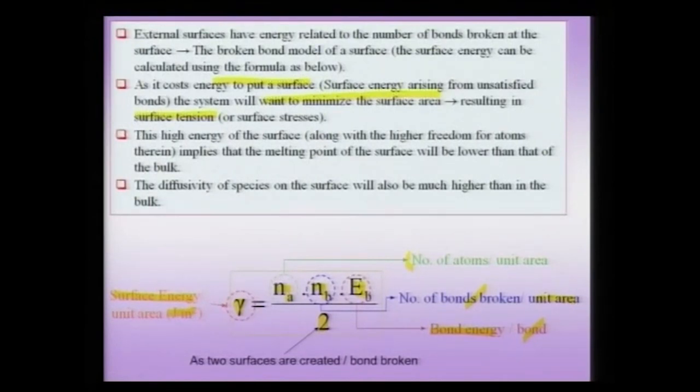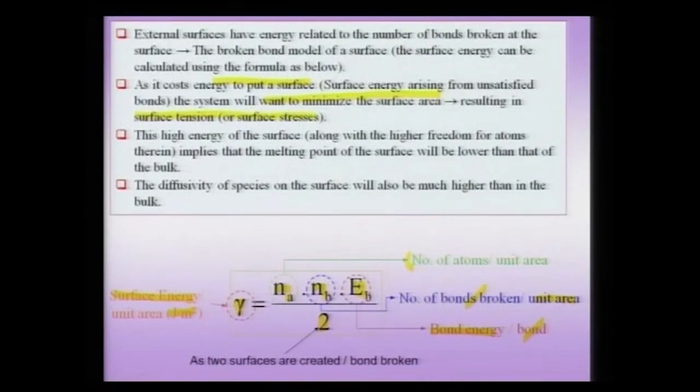Having a surface energy means that the surface will always want to reduce its area and will try to pull upon itself. The system does not want to have a large surface area; it will try to minimize the surface area. Atoms on the surface will want to come towards each other, and this implies that the surface is in a state of tension known as surface tension. The origin of the surface tension comes from the energy expended when trying to put a surface.